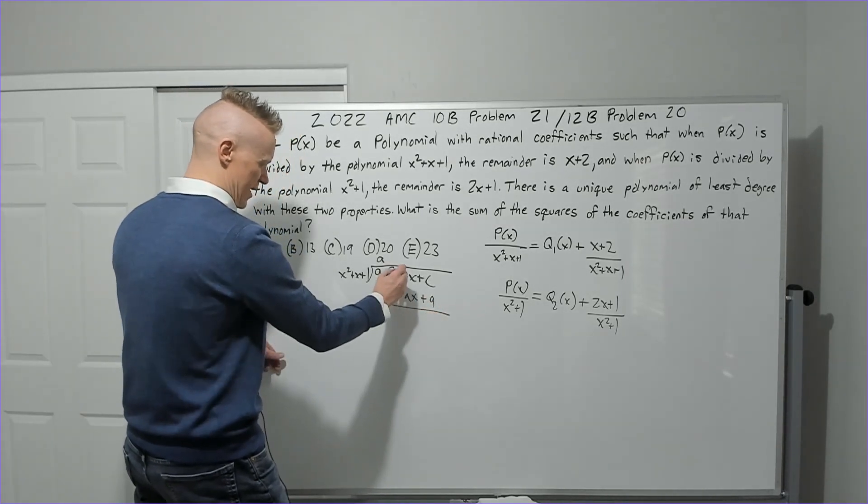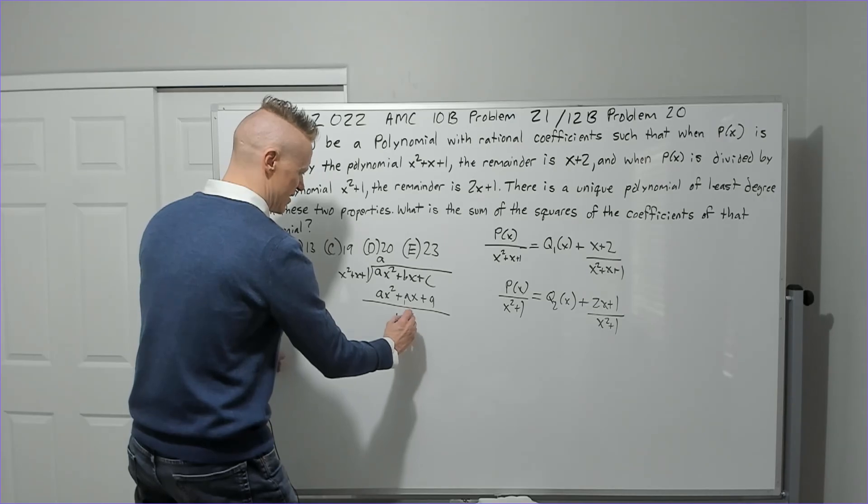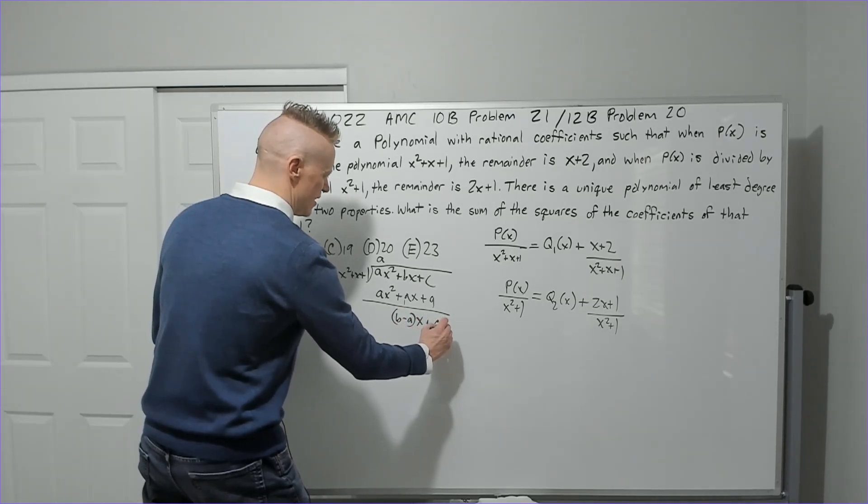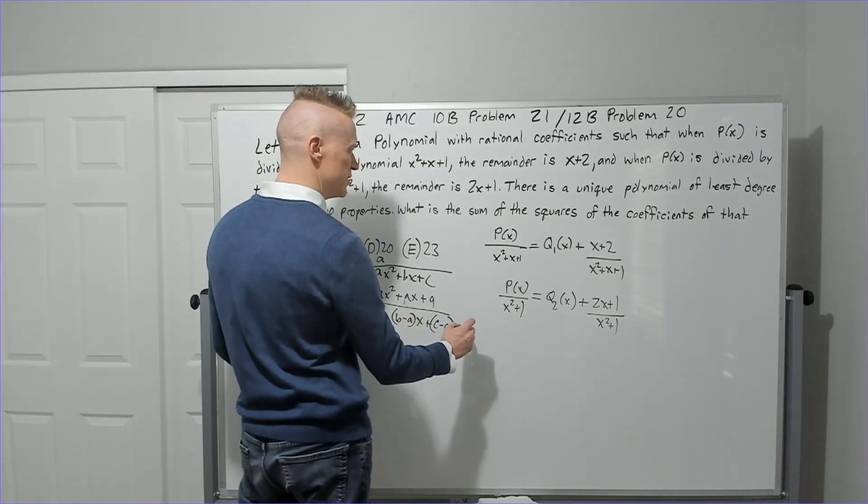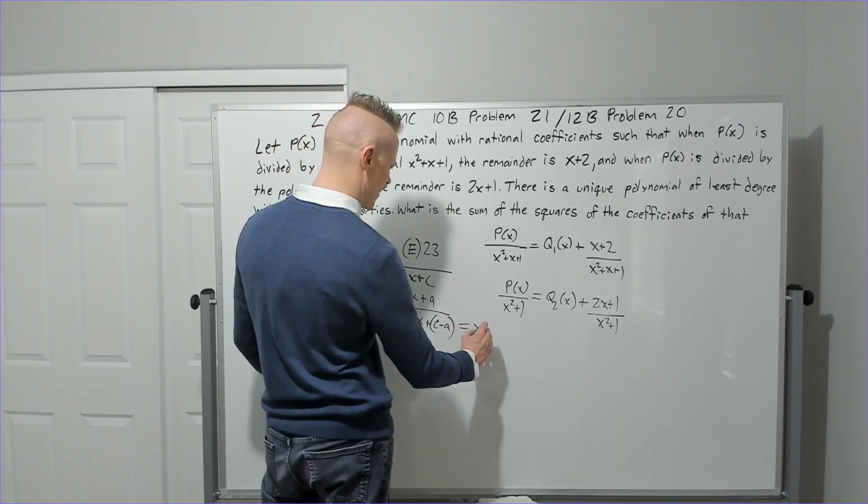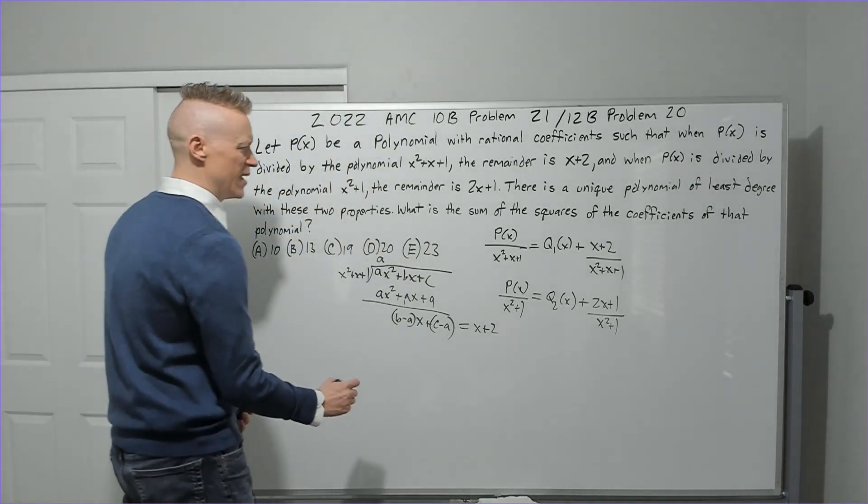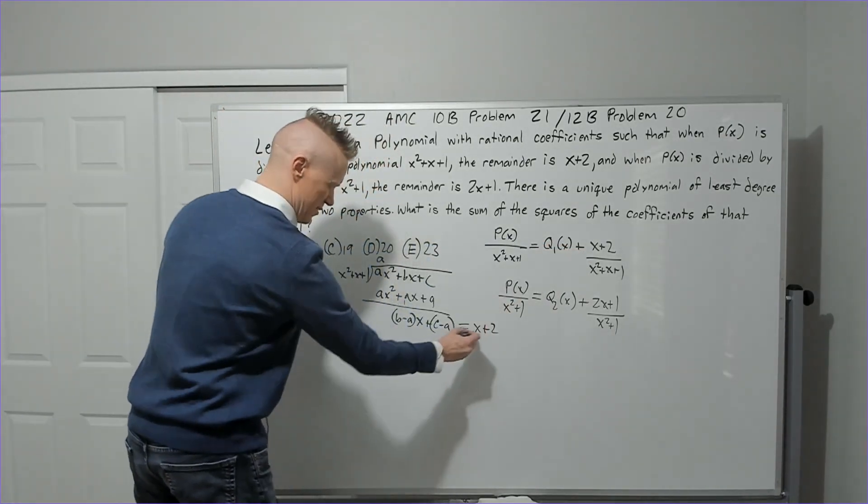You're going to subtract this. So when you subtract it, you will get (b minus a) times x plus (c minus a). Okay, we know that needs to equal x plus two. That's the remainder, right?